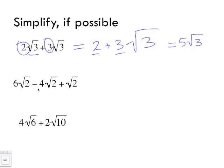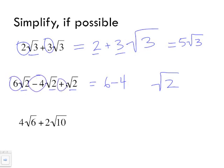Next example: 6 radical 2 minus 4 radical 2 plus radical 2. Again, all the radical 2s are exactly the same, so radical 2 won't change. We only operate on the values in front: 6 minus 4 gives 2, and since there's no number on the last term it's really a 1, so 2 plus 1 gives 3. The answer is 3 radical 2.